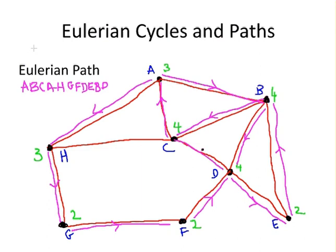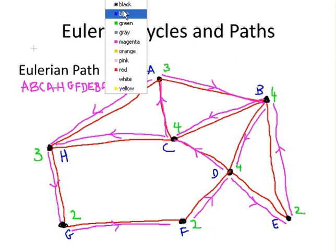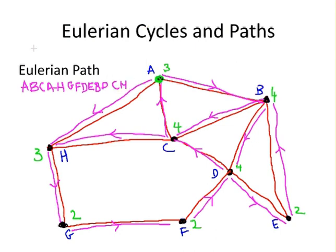Then we'll go back to C. And then finish up on H. And that is an Eulerian path. So we've finished on two different vertices. We've started on A, and we have finished on H. That's our starting point. That's our finishing point. And that concludes our presentation.